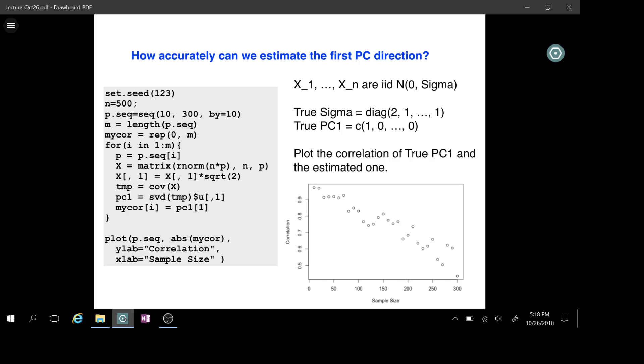You can see the correlation when p is relatively small, we can reliably estimate the first PC direction. But when p gets larger and larger, the correlation is getting smaller and smaller, meaning the error is really large.